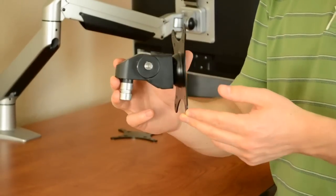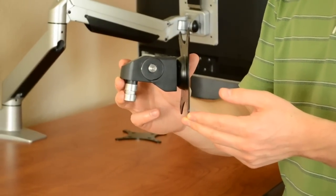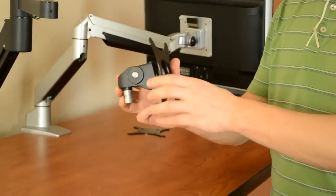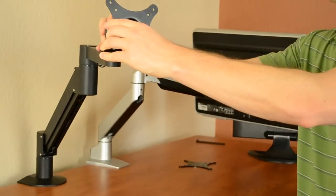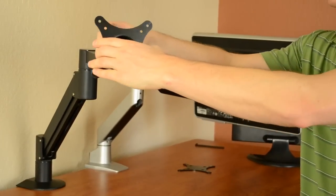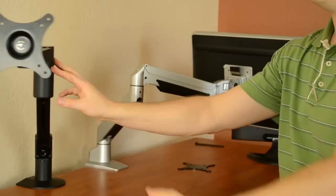Component three, the tilter mechanism. The tilter is the key component that gives the monitor its ergonomic functionality. This fosters right to left, up and down tilt flexibility.